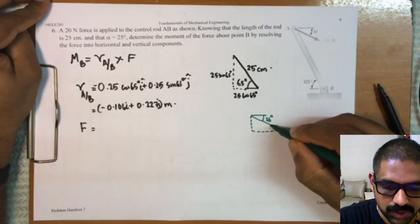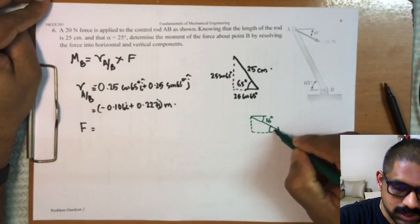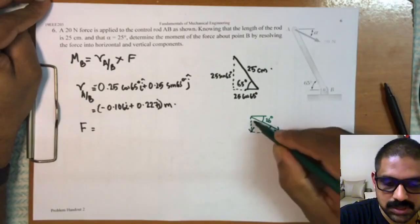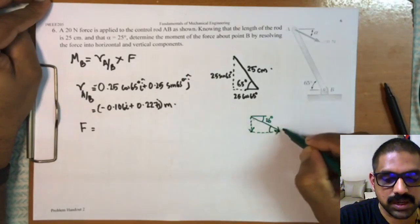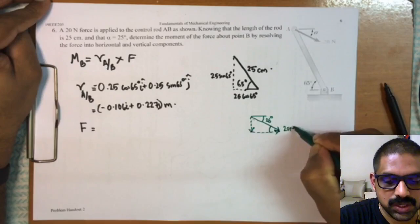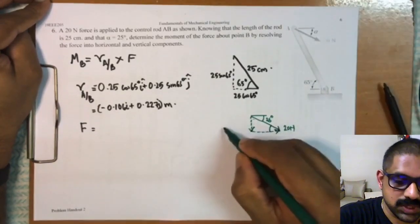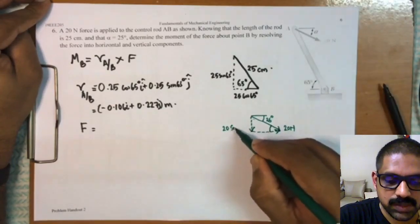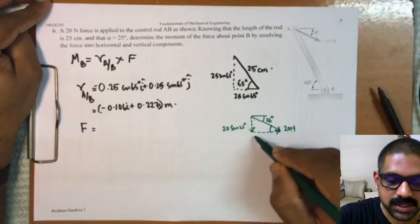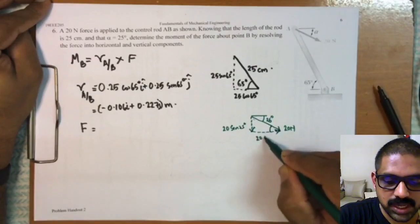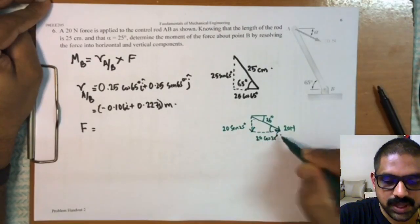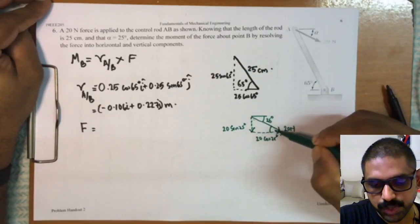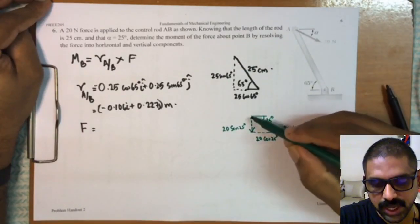...this angle will also be 25 degrees. So this plus this becomes this force vector of 20 newtons. So this becomes 20... this angle is 25 degrees, so 20 sin 25, and this length becomes 20 cos 25. Here, if you watch carefully, you will understand that the x component is in the positive direction and the y component is in the negative direction.